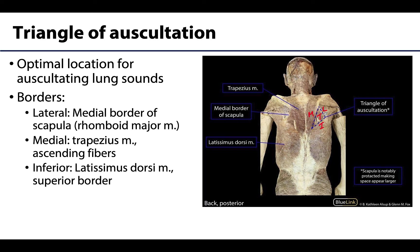On this image, because the scapula is a bit overly protracted, it actually makes the space appear a little bit bigger than it actually is. Why would we have you memorize its boundaries? Not because we're mean, but because this is going to be useful to you as a future clinician. It is here that you can really optimally auscultate many lung sounds, particularly in the inferior lobes of the lungs. When a patient crosses their arms across their chest, they retract the scapula, allowing for fewer structures between the stethoscope and the lungs.